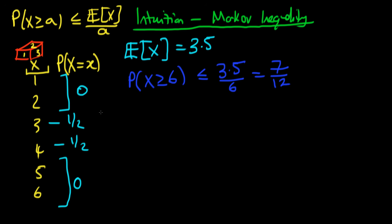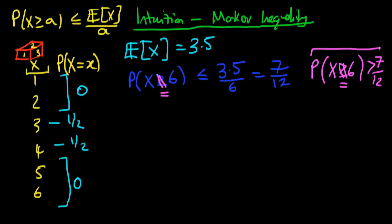Let's now assume that this isn't true. Let's assume that the probability that X is greater than or equal to 6 is actually greater than 7 over 12. Also, the probability that X is greater than or equal to 6 is actually the probability that X equals 6, because there are no other numbers greater than or equal to 6. Let's use this counter-example and see if we can force some sort of contradiction — specifically, that the expected value of X cannot be 3.5.